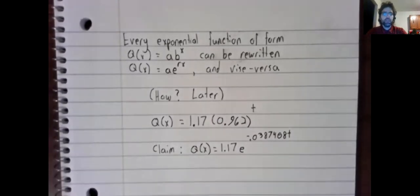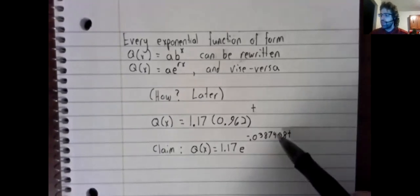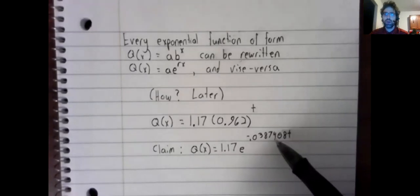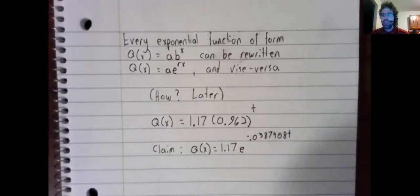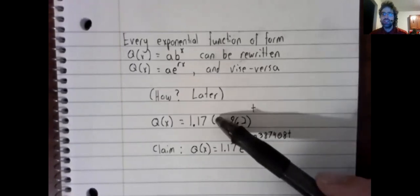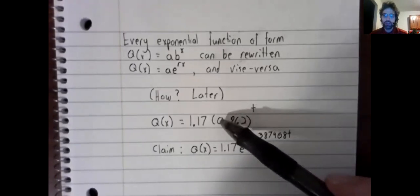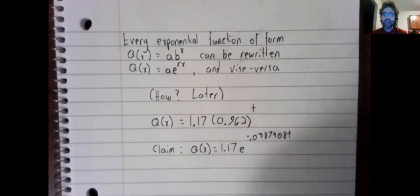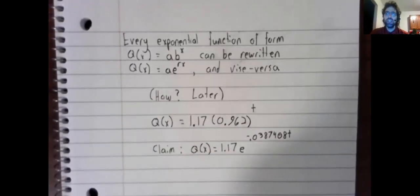And at the moment, we don't have any way of seeing where this number comes from. We're just making the contention that this could be rewritten using exponential growth, if only we knew how.